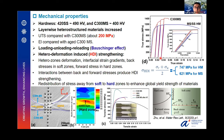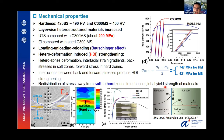Loading-unloading-reloading tensile tests were carried out to investigate the Bauschinger effect and understand the hetero-deformation-induced (HDI) strengthening in this material. The calculated results suggest the HM material has a higher HDI effect than uniform material, and we identify this as the primary strengthening mechanism. During deformation, the soft material undergoes large deformation first, generating dislocations at the interface and boundary. The hard zone then exerts back stress on the soft zone, making it stronger and enhancing the global yield strength.